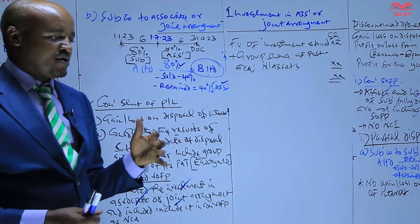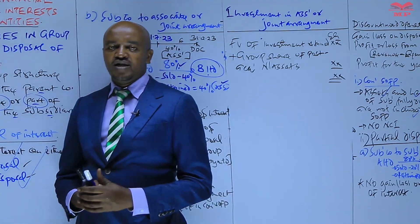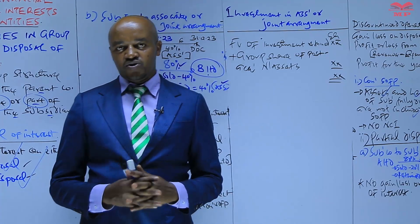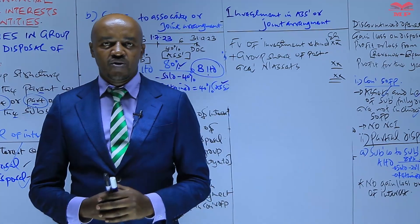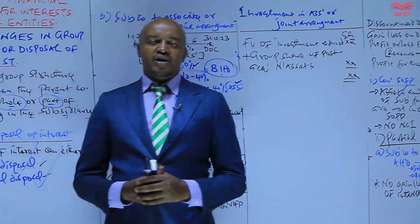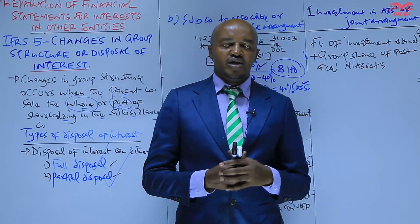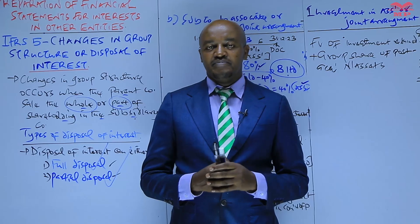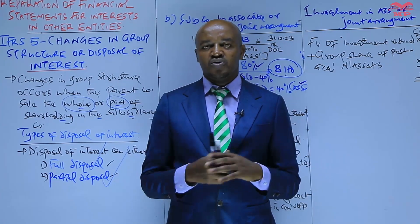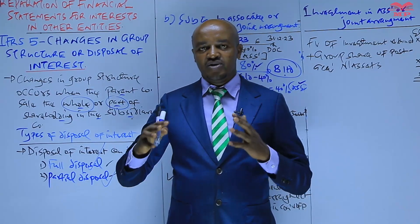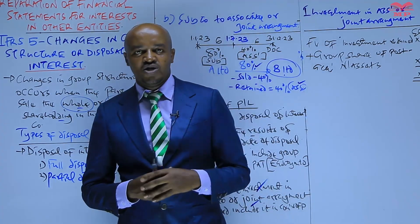Those are the different scenarios of partial disposal and how we deal with them in preparing the consolidated financial statements. In our next session, we will look at an illustration question on how to prepare the group accounts and compute the gain or loss on disposal in the case of disposal of interest. See you in the next session.